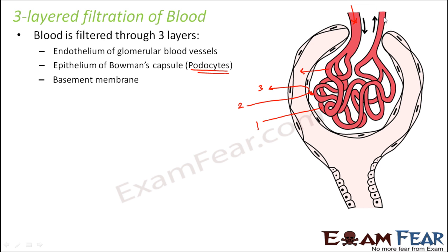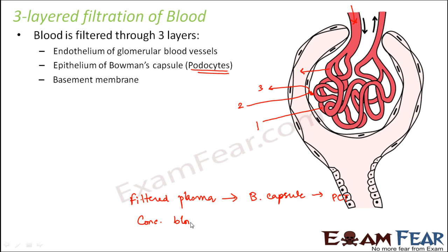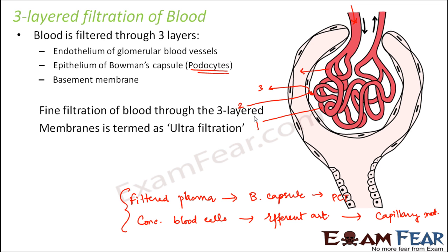The concentrated blood which enters the efferent arteriole will go into the capillary network surrounding the PCT. From this we saw that the filtered plasma from the glomerulus moves into the Bowman's capsule and further moves down to the PCT, whereas the concentrated blood cells move through the efferent arteriole into the surrounding capillaries. This fine filtration of blood through the three-layered membranes is known as ultra-filtration, because the filtration happens not through one layer but through three different layers.